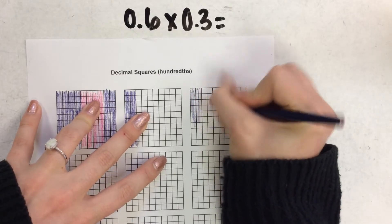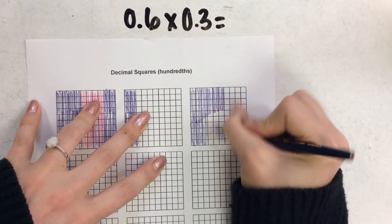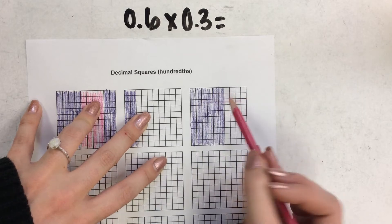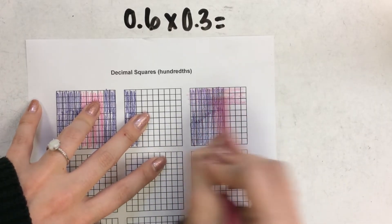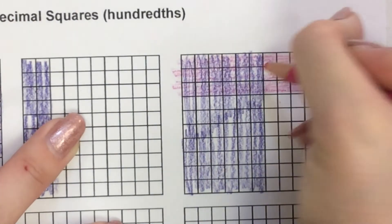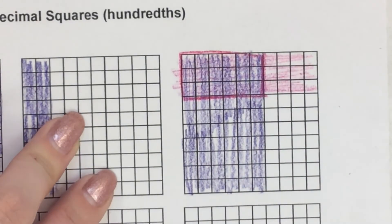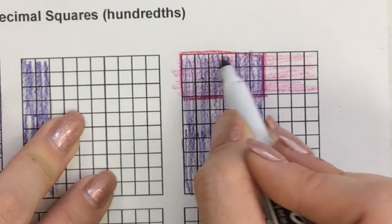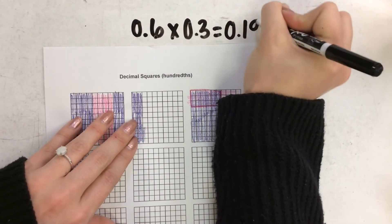So we shade up and down six tenths, and then we go side to side three tenths. In our overlapped area — let me zoom in so you can see it better — that overlap represents three tenths times six tenths. We can count the hundredths squares in the overlap: eighteen. So three tenths times six tenths is eighteen hundredths.